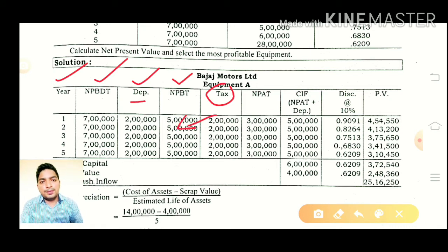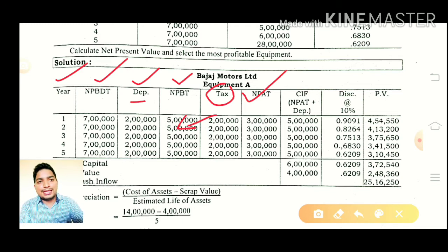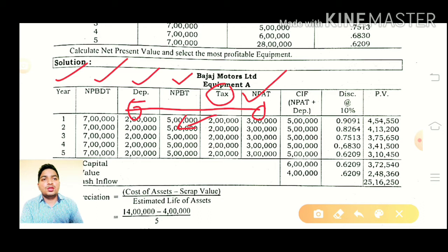Net profit before tax, then calculate tax. The net profit before tax is 2,00,000, tax is equal to 3,00,000, giving net profit after tax. Then, cash inflow equals net profit after tax plus depreciation — you add depreciation back. Finally, apply the discounting factor by multiplication.